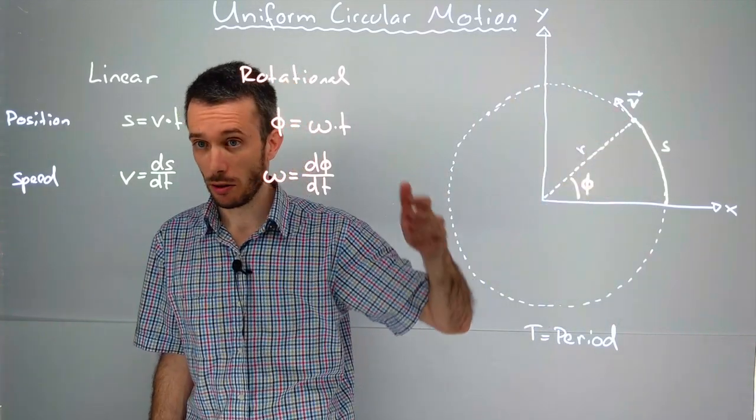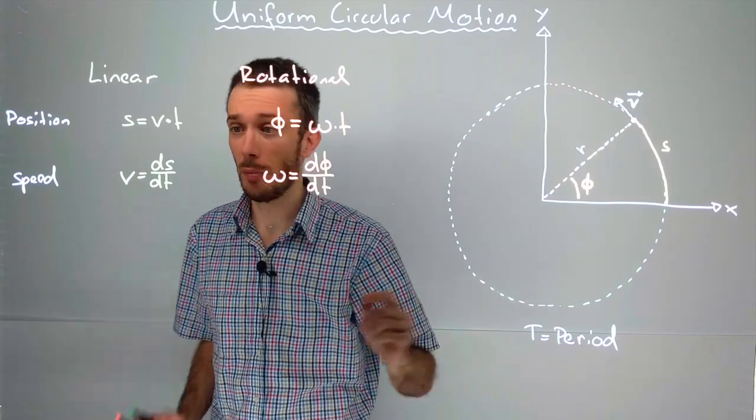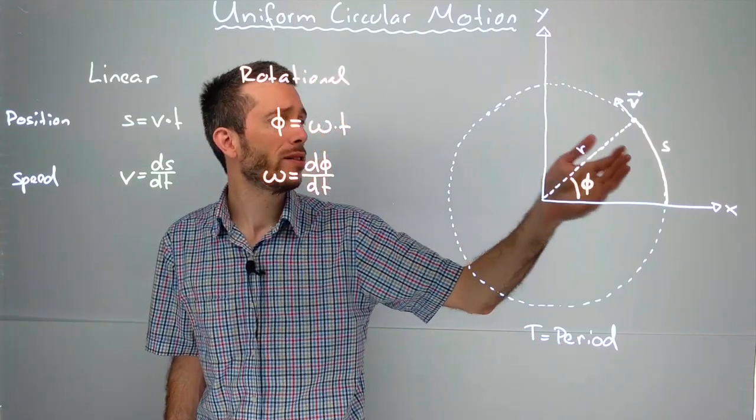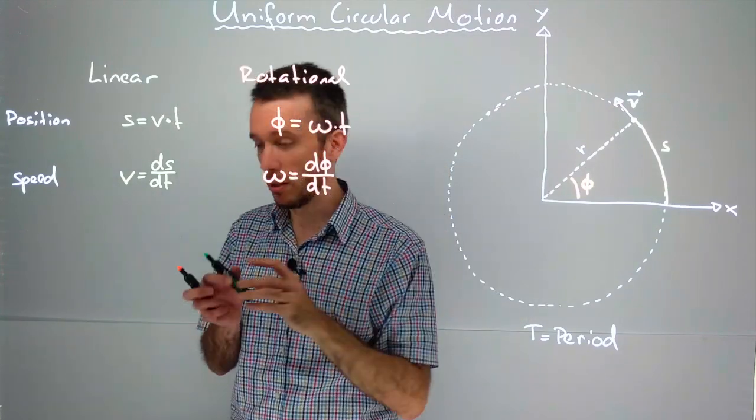If we consider the time it takes to go around one time as the period, capital T, and say, if my linear speed is constant, I have to go around once.